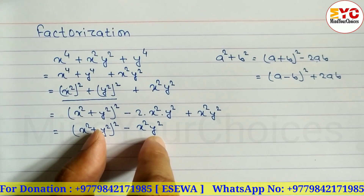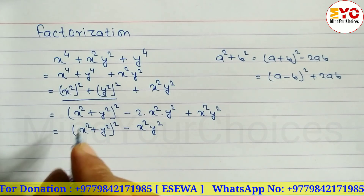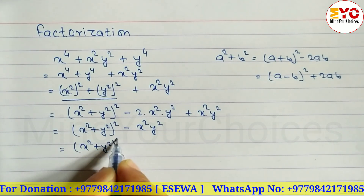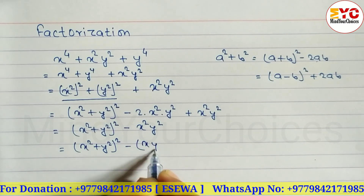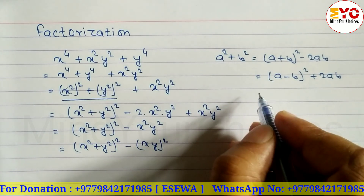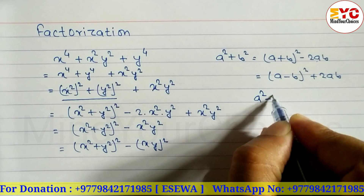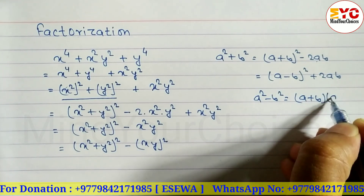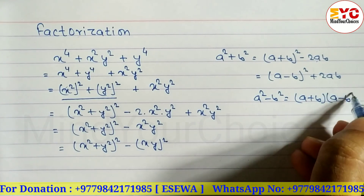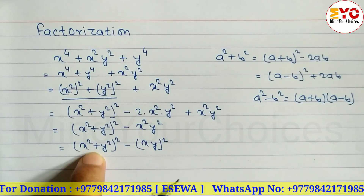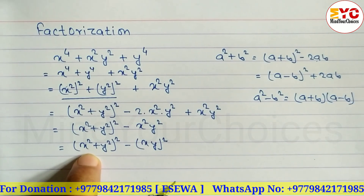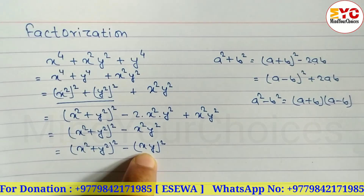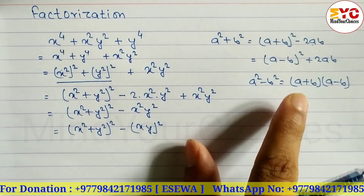Now convert this into the form of a² - b²: we get (x² + y²)² - (xy)². The formula for a² - b² is (a + b)(a - b). Here a = x² + y² and b = xy.